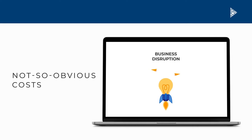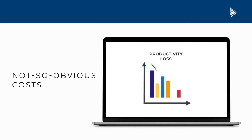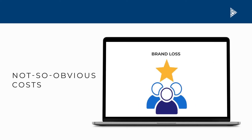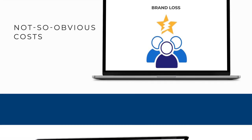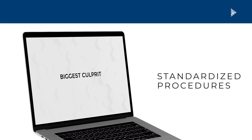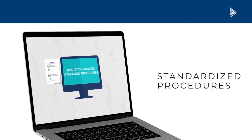But it's the not-so-obvious costs that hurt the organization more. These include: business disruption due to regulator lockdown of a business unit or the entire organization; productivity loss each time employees need to focus on a cleanup, leaving little time for productive work; and brand loss due to bad media coverage leading to customer erosion.